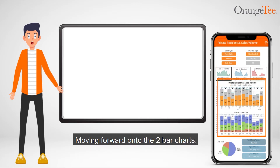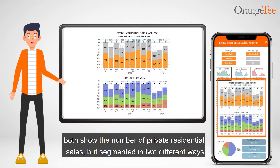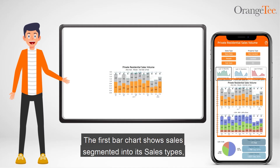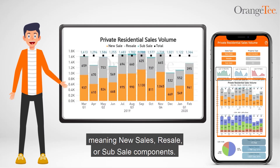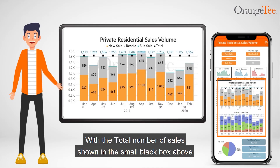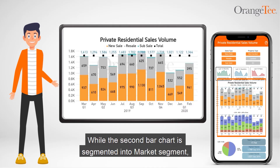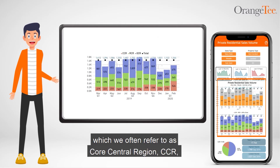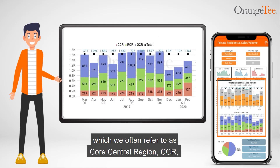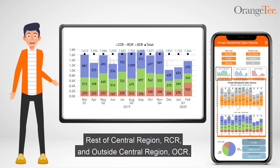Moving forward onto the two bar charts, both show the number of private residential sales, but segmented in two different ways. The first bar chart shows sales segmented into its sales types, meaning new sales, resale, or sub sale components, with the total number of sales shown in the small black box above. While the second bar chart is segmented into market segment, which we often refer to as core central region (CCR), rest of central region (RCR), and outside central region (OCR).